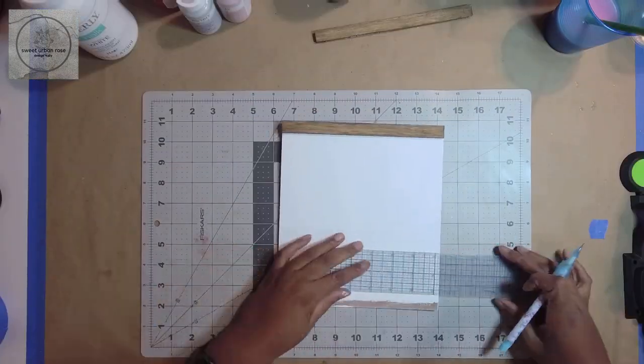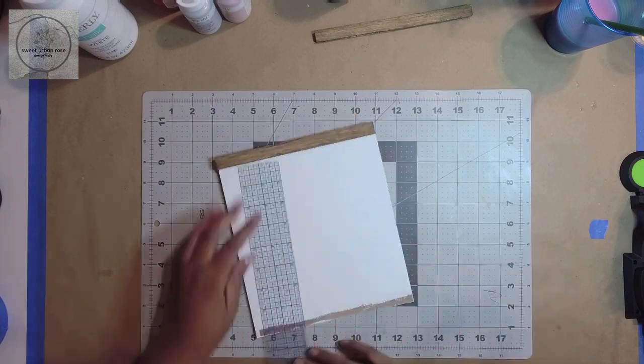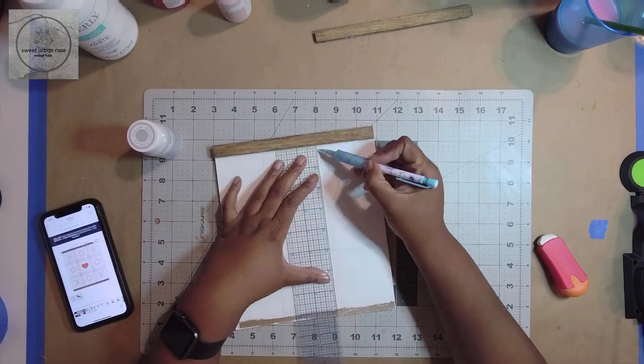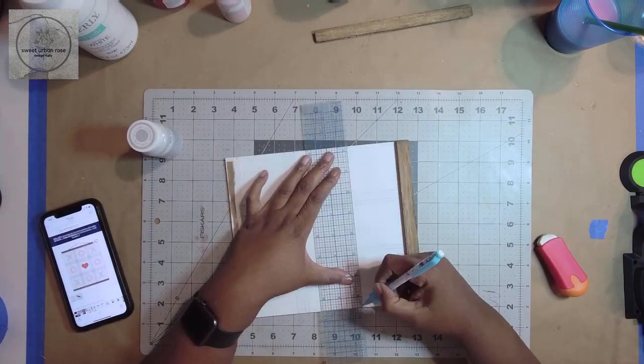Once the wax was dry, I marked the tic-tac-toe segments. Mine measured approximately two and five-eighths inches squared. Next, using the photo from my phone, I marked out the additional lines to make the ticking stripes.